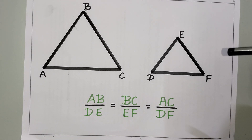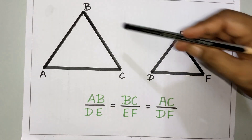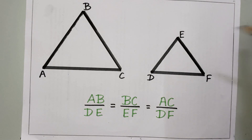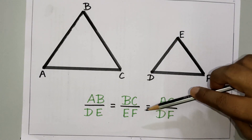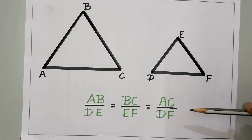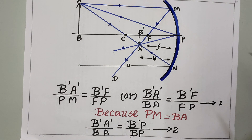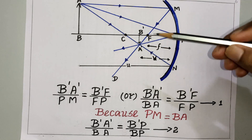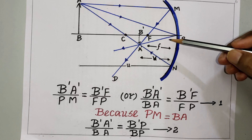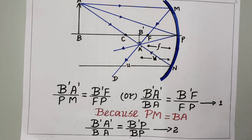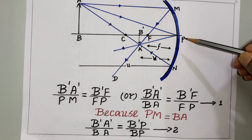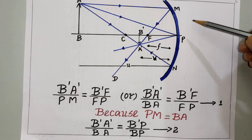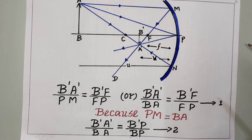Before moving to the derivation, we need to remember a Class 10 mathematics rule: similar triangle properties. According to similar triangle properties, corresponding sides are in proportion — AB / DE = BC / EF = AC / DF. Applying this property to the diagram, we can derive the mirror equation properly.